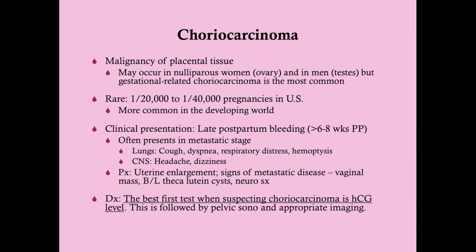The next form of malignant GTD is choriocarcinoma. This one is much more rare and is a malignancy of placental tissue — a malignant necrotizing tumor that consists of both cytotrophoblasts and syncytiotrophoblasts, with no apparent organization of placental villi on histology. Choriocarcinoma can occur in the testes in a man and in the ovaries in a woman, but choriocarcinoma is most commonly derived from actual fetal placental tissue. The mechanism is a little different when it occurs in the ovary or testes.